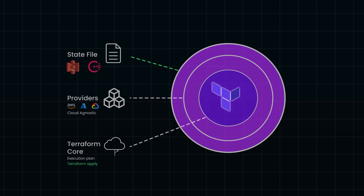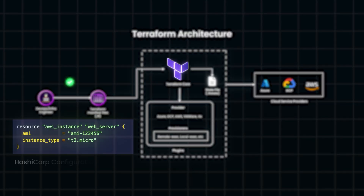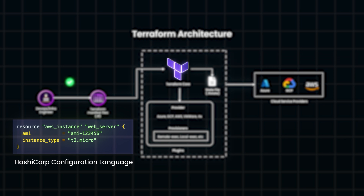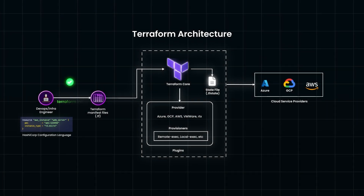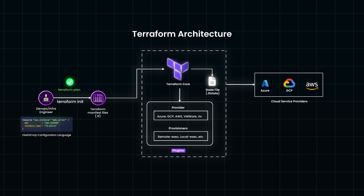Terraform follows a straightforward but powerful workflow. First, you define your infrastructure in a configuration file using HashiCorp Configuration Language, or HCL. For example, to create an EC2 instance on AWS, you might write like this. Next, you run Terraform init to download the necessary provider plugins and set up your working environment. Use Terraform plan to generate a preview of the changes that will be made to your infrastructure, giving you a chance to review any additions or modifications before applying them.